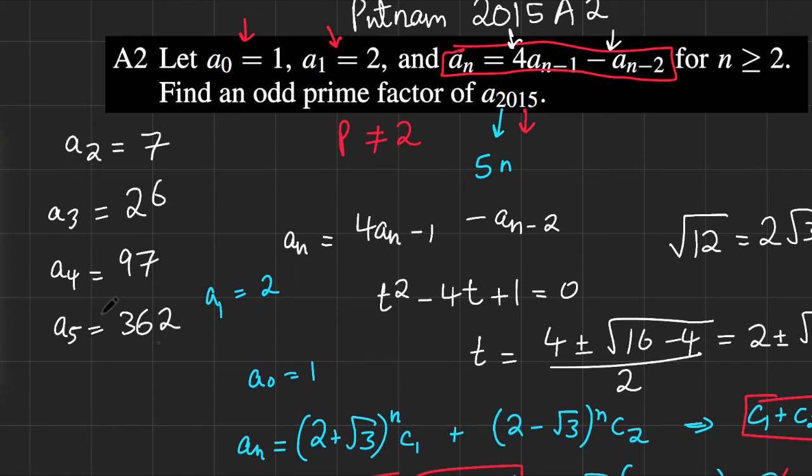So, 362, this is clearly even. So if I divide this by 2, I get 181, and as it turns out, 181 is actually a prime. So our answer is simply 181. That's it.